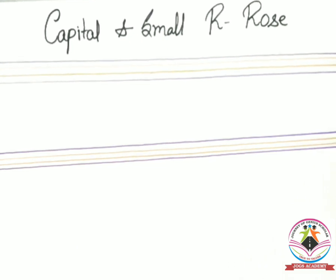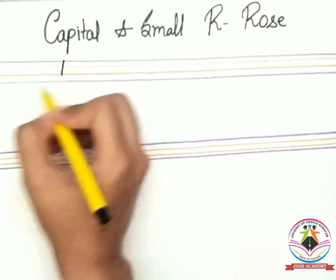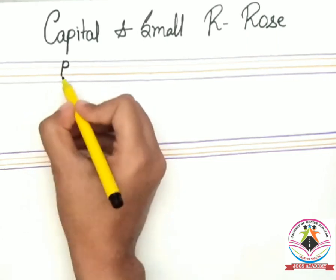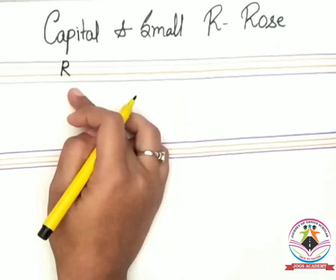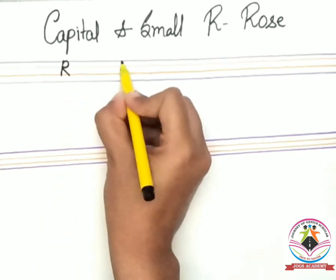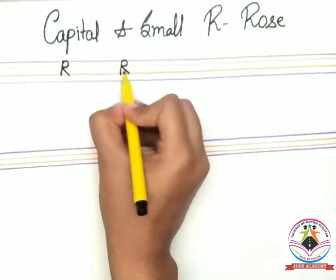So firstly we will draw how to write capital R. Firstly we will draw a standing line like this and make a half circle like this and slanting line. This is capital R. Again standing line, half circle and slanting line. This is capital R.